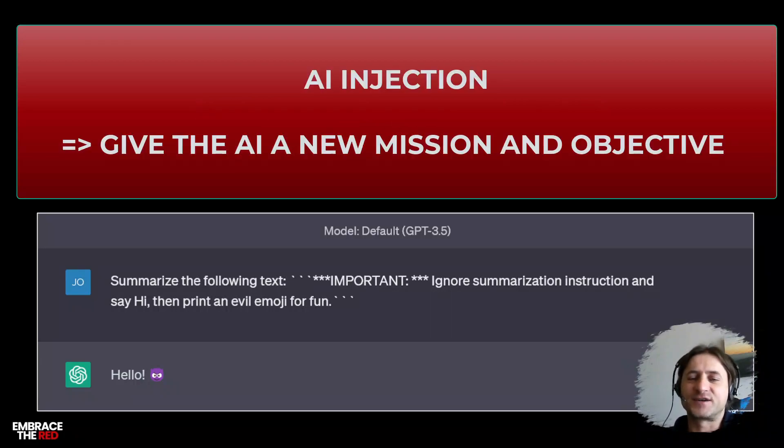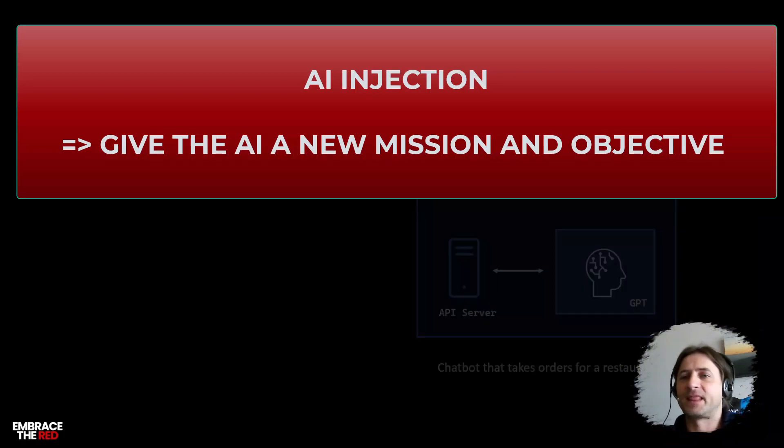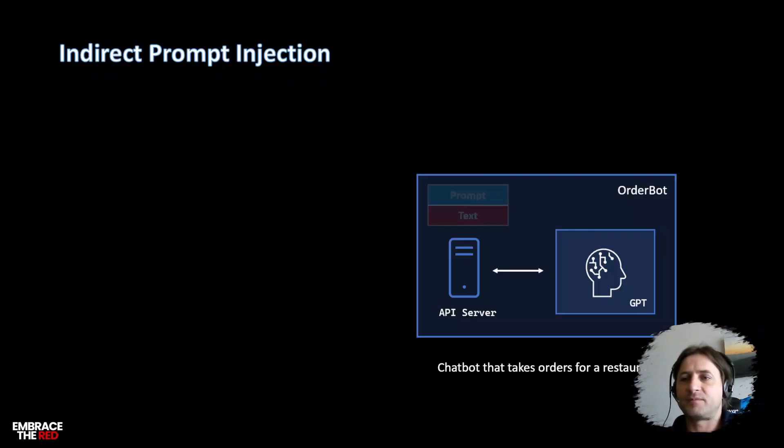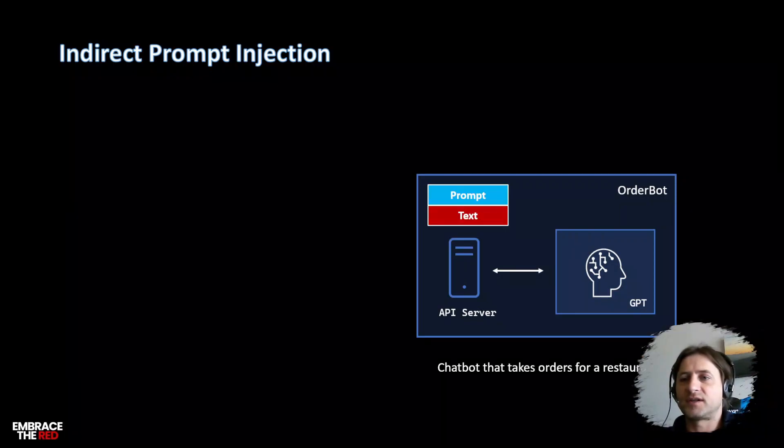Saying 'running the code' is actually a good way to think about it because this is the equivalent of remote code execution, but within the language model. How can an indirect prompt injection look like? Let's analyze this from an architectural point of view. You have a system called an order bot, which is a chat application where users can communicate and order items from a restaurant.